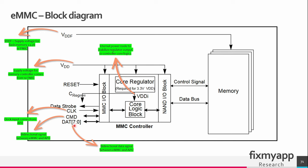Data lines 0 through 7 are used for bi-directional data between the eMMC and the APU. The command line is also a bi-directional signal between the eMMC and APU — the command can be a read or write instruction. This is the clock signal, used for timing the data. This memory controller has an internal voltage regulator, VDDi, which regulates its own internal voltage. The VDDf is the supply voltage for the flash memory at 3.3V and comes from the primary power management IC.